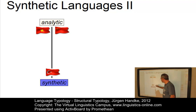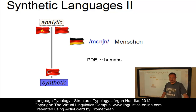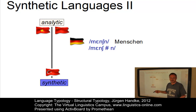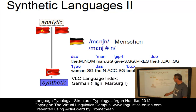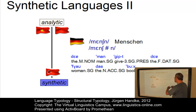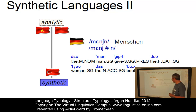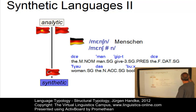Let's now look at another example — German, my own mother tongue. The word 'Menschen' can be subdivided into 'Mensch' plus its final suffix, normally phonologically represented just by an alveolar nasal consonant. Here is the sentence: 'Der Mann gibt der Frau das Buch.' We can subdivide 'gibt' into 'gib' (the stem) and '-t' (third person singular present tense). The remaining words incorporate various morphological and grammatical functions, but German is clearly synthetic too.